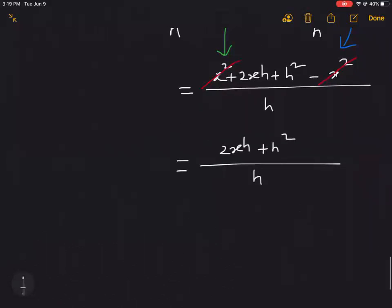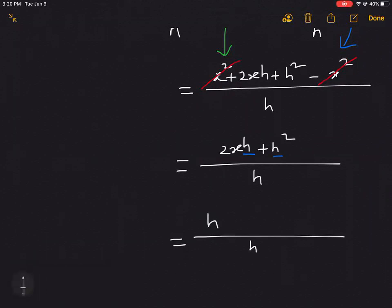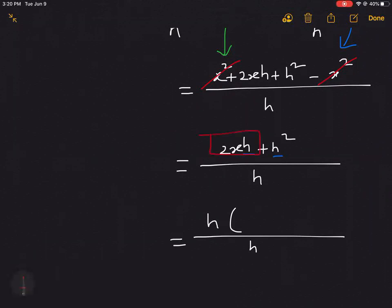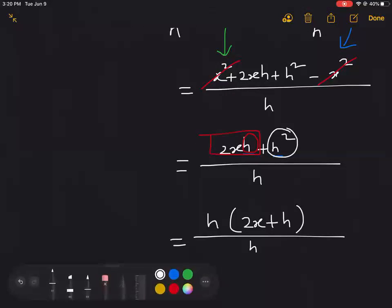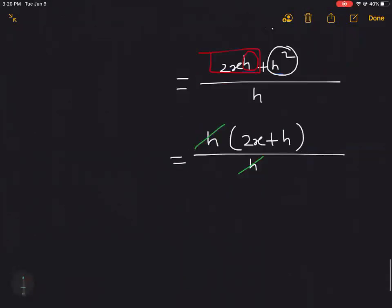Continuing the simplification, we have x² + 2xh + h² minus x², over h. The x² terms cancel, leaving 2xh + h² over h. We factor out h from the numerator, giving h(2x + h) over h, and the h's cancel. Our final answer is 2x + h.